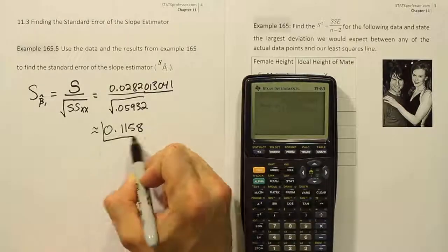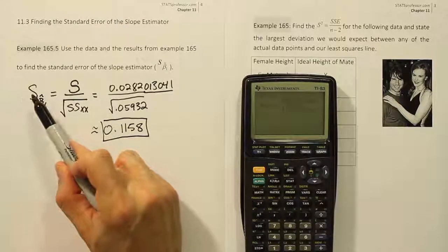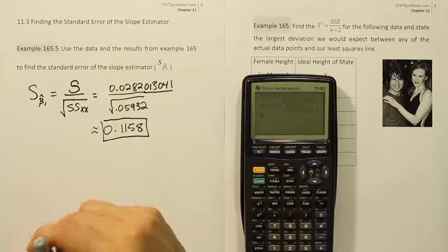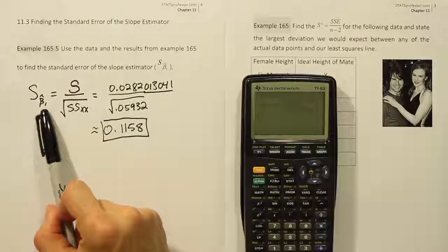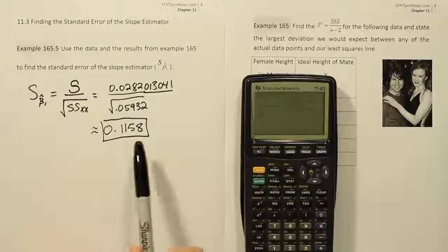That's the four decimal places but this is the standard error for your slope estimator beta 1 hat and actually this is the estimate of the standard error for the slope estimator beta 1 hat and remember what this gives.